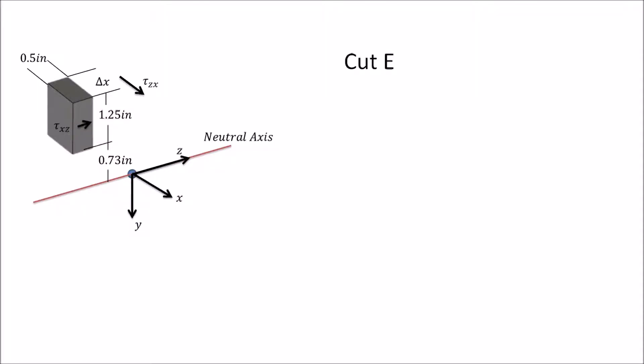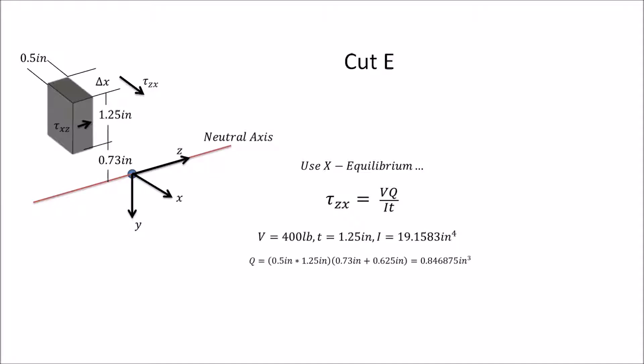Now let's look at cut E. On cut E we still use x-equilibrium, but it's going to be τ_zx instead of τ_xy. V = 400 pounds, t = 1.25 inches (material cut through), and I = 19.1583 in⁴. Q is 0.125 × 0.5 × (0.73 + 0.625) inches, giving Q = 0.84688 in³. Plugging in, τ_zx ≈ 14.15 psi, and equilibrium still holds.